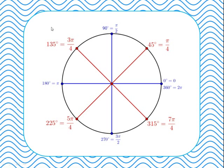A further 45 degrees takes us to 135 degrees or 3π/4 radians. Another 45 degrees gives 180 degrees, or 4π/4 which is π radians. Continuing: 5π/4, then 6π/4 which is 3π/2, then 7π/4, then 8π/4 which is 2π radians. We can continue around in an anti-clockwise direction, or go clockwise from 0 to work with negative angles.